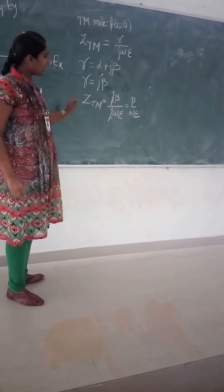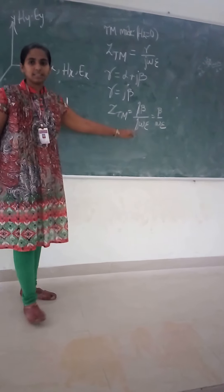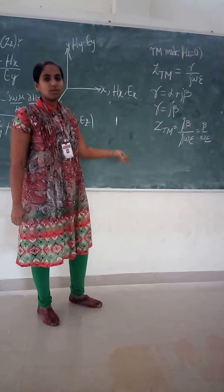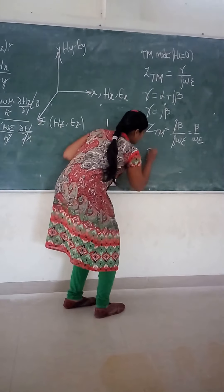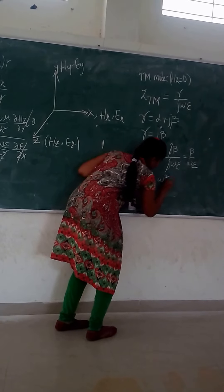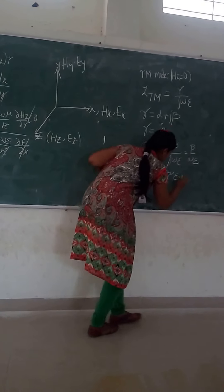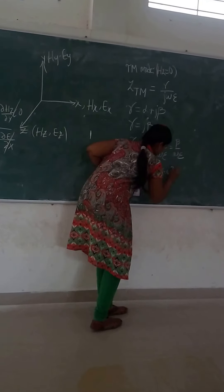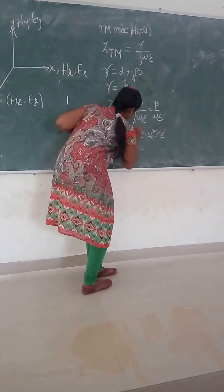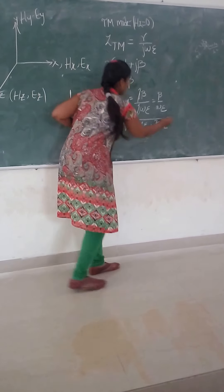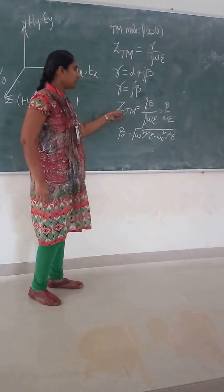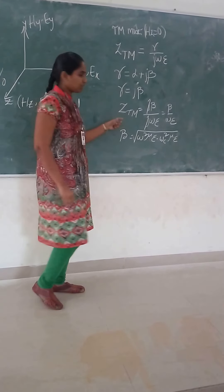From here, we have the beta value, which is already a standard equation — it is a general equation. We have to substitute this equation into the wave impedance equation for the transverse magnetic mode.